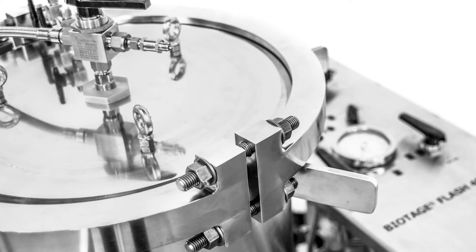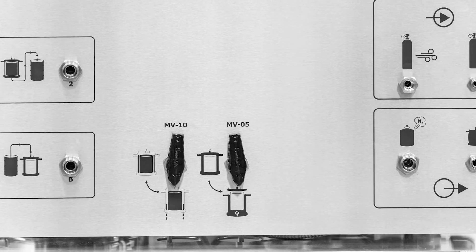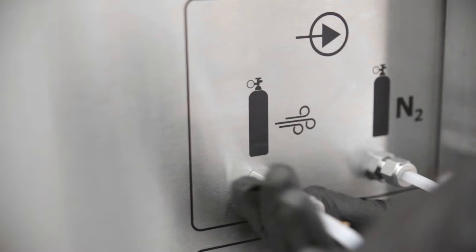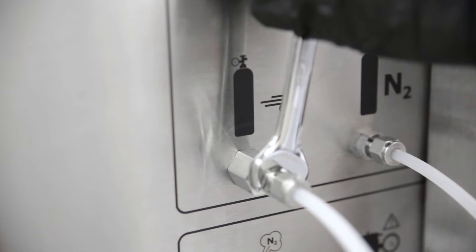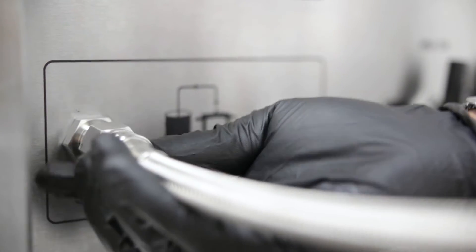Flash 400 is powered by compressed air and nitrogen which connect to the ports on the side panel. This is also where the solvent inlets and fraction collection outlets are connected.